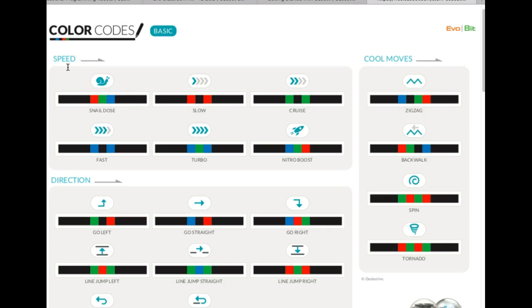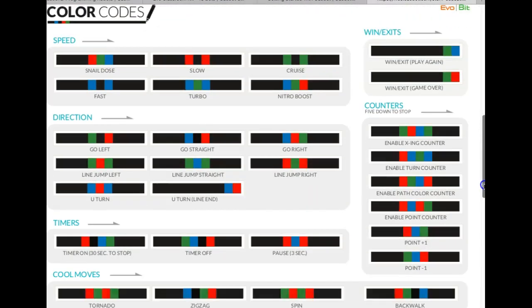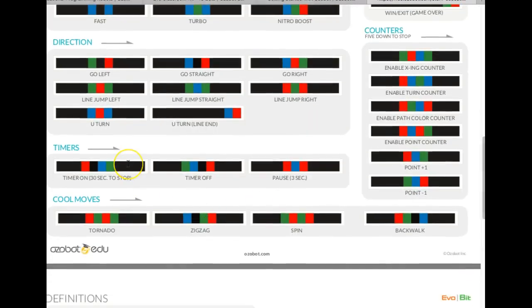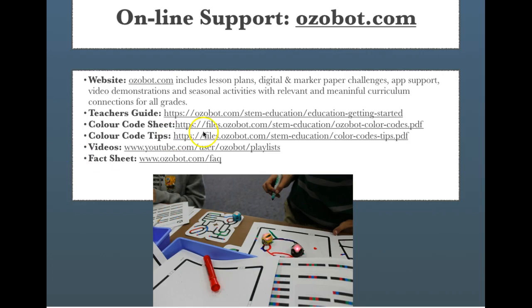Within one centimeter you can code your Ozobot with different speeds, different directions, different timing. So you can actually make the Ozobot stop, you can turn the Ozobot off with a code, and you can also pause the Ozobot with a code. These cool moves were something that I will show you in the video. I believe it does the tornado.